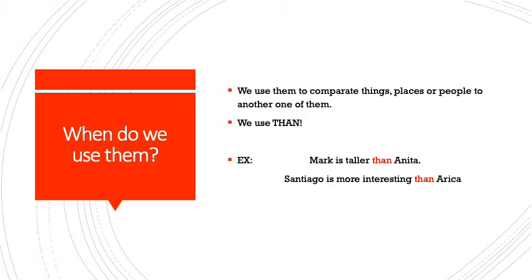For example, as you can see here, we have 'Mark is taller than Anita.' And in the second example, we have 'Santiago is more interesting than Arica.' So what are we comparing in the first sentence? As you can see, we're comparing Mark and Anita's height, and we are saying that Mark is taller than her.